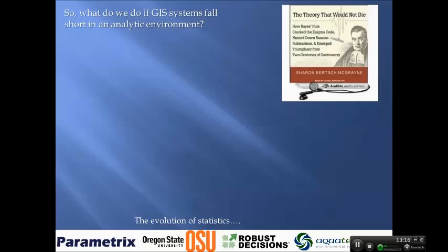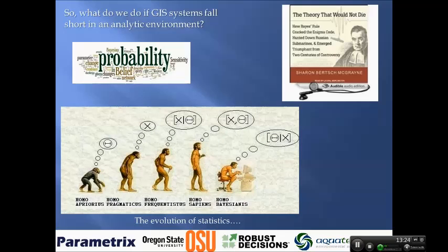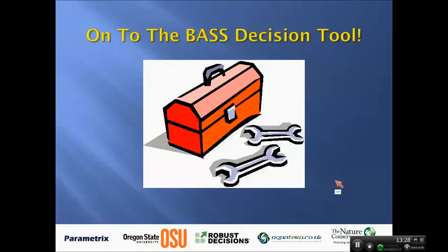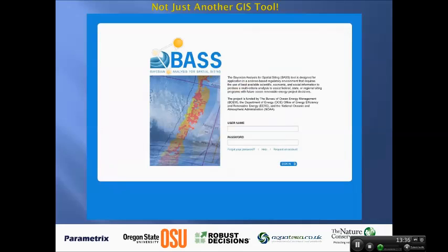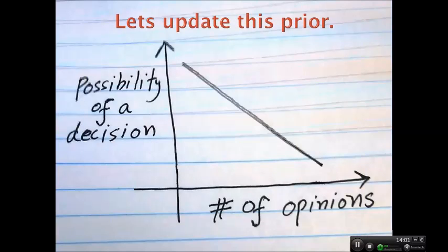We'd like to do something different than that, so we're going to use a Bayesian-type system. Now we're going to go on to the BASS decision tool and what's different about it. The problem today is choosing a suitable location for a marine renewable energy device in the face of technical constraints, human use needs, and conflicts. As you may have seen plotted: chances of making a decision go down as the number of opinions goes up, and part of what we're trying to do is make that graph flatter.